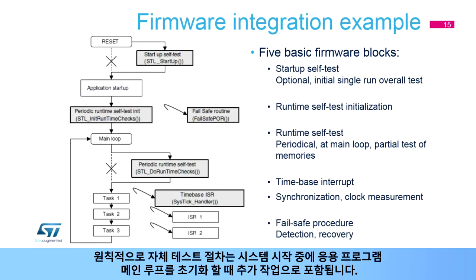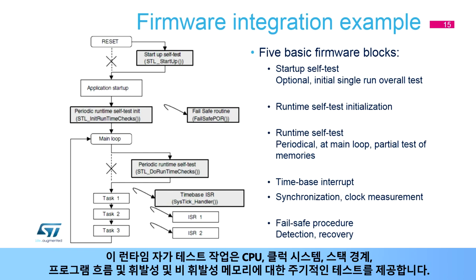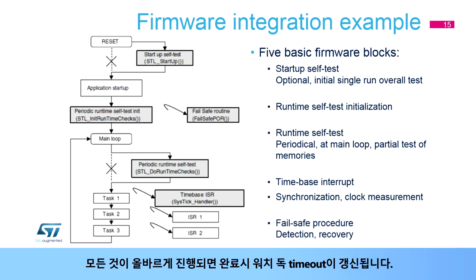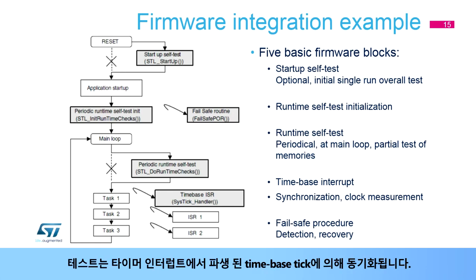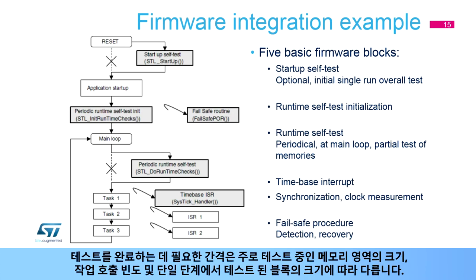In principle, self-test procedures are included as an additional task when initializing the application main loop during system startup. This runtime self-test task provides periodic testing of the CPU, clock system, stack boundary, program flow, and both volatile and non-volatile memories. The watchdog timeout is refreshed upon completion if everything goes correctly. The memory areas are tested step-by-step per parts within the task, synchronized by time-based ticks derived from timer interrupts. The interval required to complete the test depends mainly on the size of the memory areas under test, the frequency of task calls, and the sizes of the blocks tested in a single step.